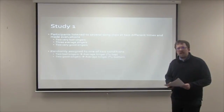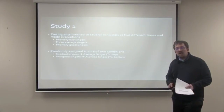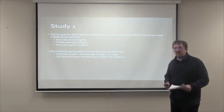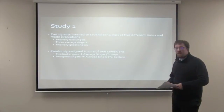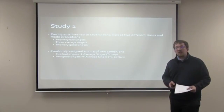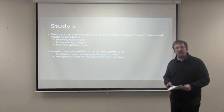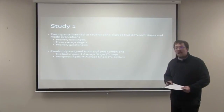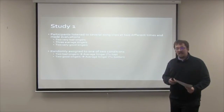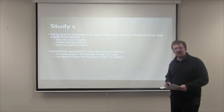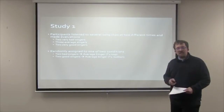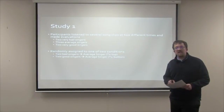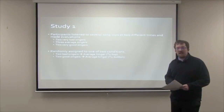Participants were randomly assigned to one of two conditions. In the first condition, called T1 top, participants listened to two bad singers, two good singers, and then an average singer. In the second condition, called T1 bottom, participants listened to two good singers and then an average singer. The reason for this was to make the average singer look relatively good or bad by comparison.